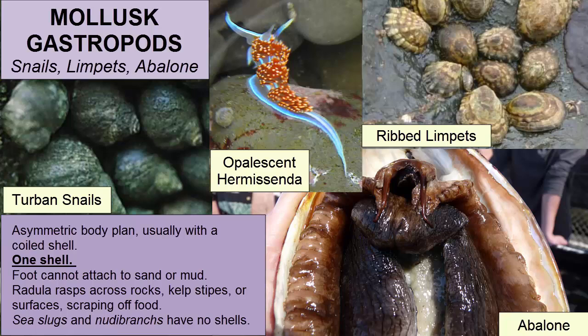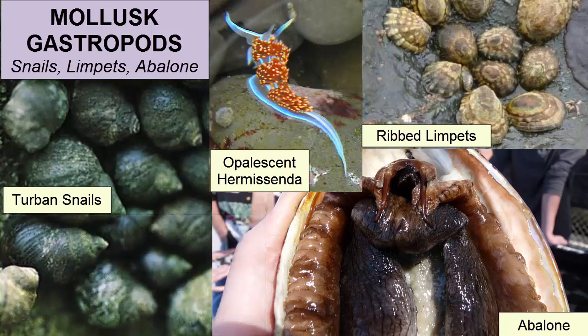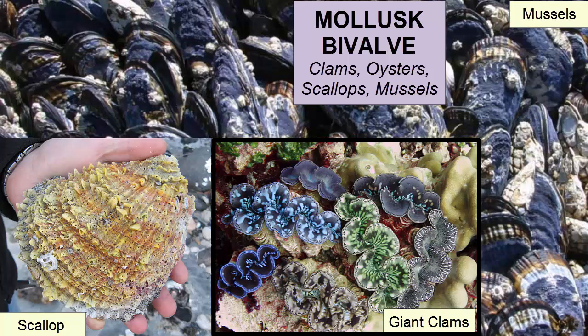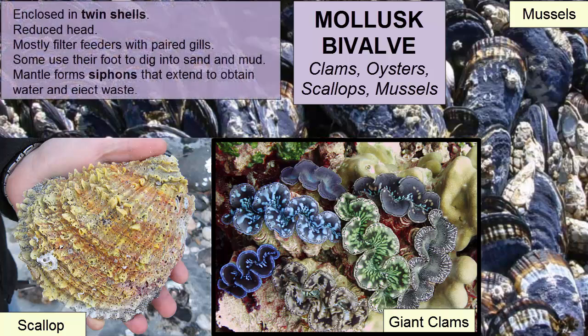Class Gastropoda consists of molluscs with an asymmetric body plan, usually with a coiled shell, whose foot cannot attach to sand or mud. The radula rasps across rocks, kelp stripes, or surfaces, scraping off food. Gastropoda include 43,000 species: snails, limpets, abalones, sea slugs, and nudibranchs, which have no shells. Class Bivalvia consists of molluscs enclosed in twin shells; they have a reduced head and are mostly filter feeders with paired gills.